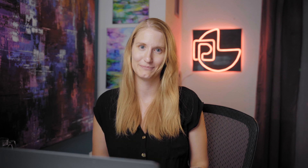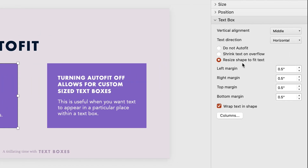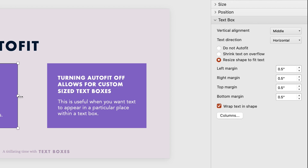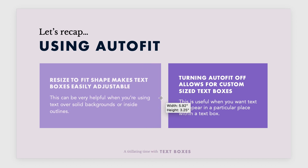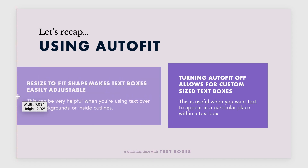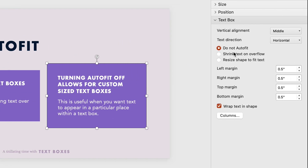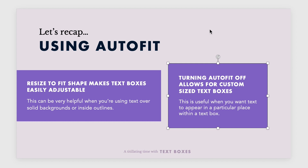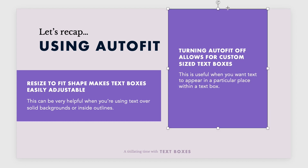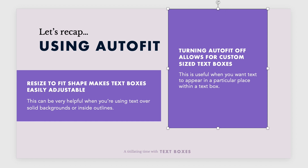Time to recap. First, auto fit: selecting 'Resize shape to fit text' in the Size and Properties panel automatically changes the text box dimensions to match the text length — especially useful for boxes with backgrounds or colored outlines. Selecting 'Do not auto fit' lets you change the size of the text box regardless of text amount, giving you more ability to choose where text is placed within it. By changing the margins of a text box you can adjust where the text sits within the frame — an easy way to keep a consistent look across matching text fields or to give space for supporting visuals like icons and images.